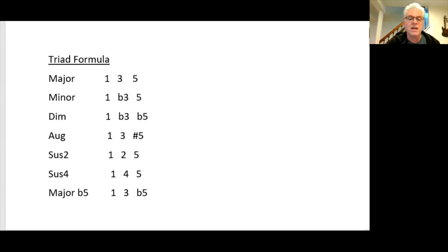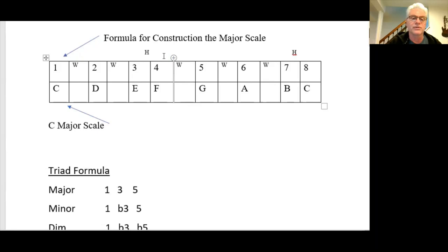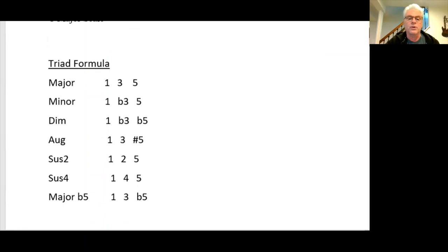The next one is a major flat five. So we have a C, E, and a G flat. That also could be called a sharp four as well, which would give you the Lydian sound. Or four and eleven are the same. So we could even call that a sharp eleven. So now we understand the formulas.